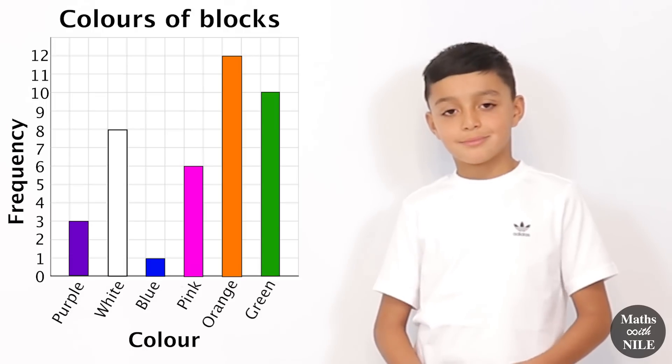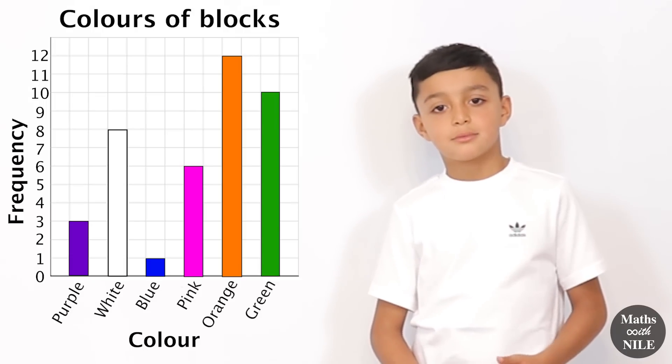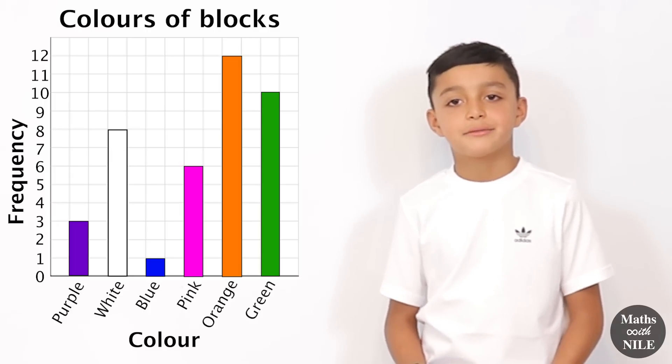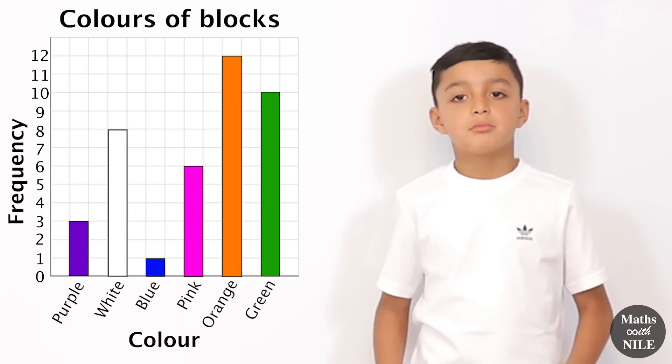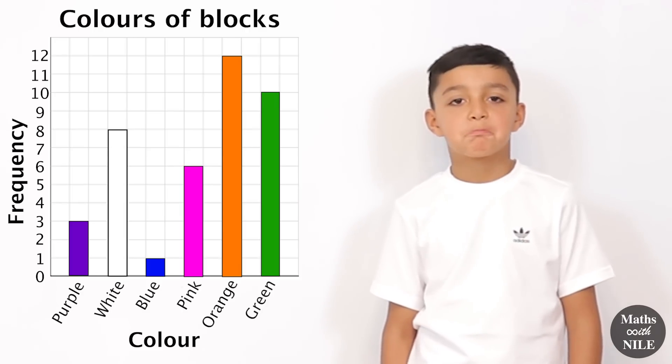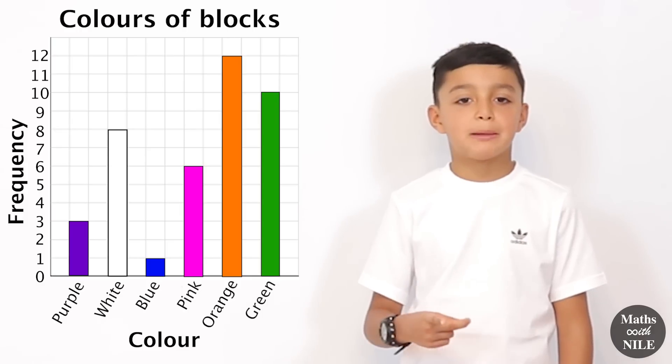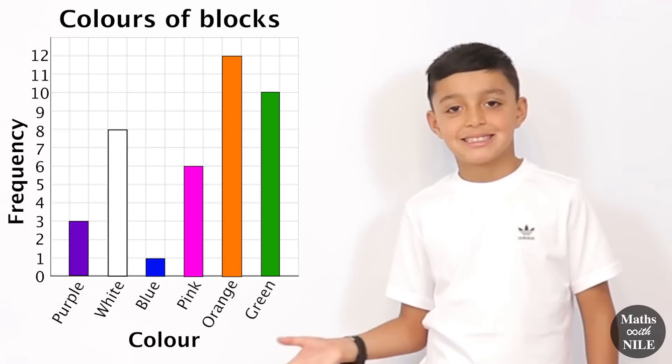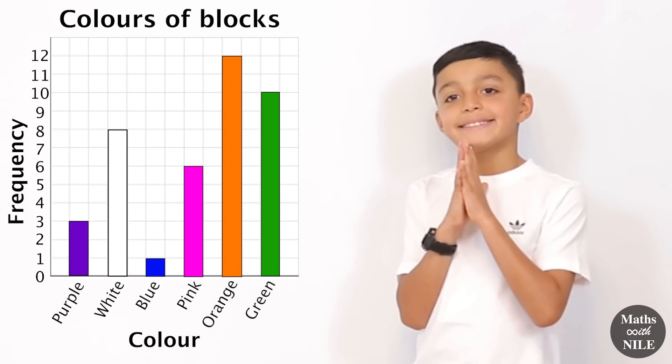So if I said to you straight away, what's the most popular colour? Orange. What's the least popular colour? Blue. If I said to you, how many does purple and white, how many blocks did you have purple and white in total, what would you quickly do? I would do 3 plus 8, which is 11. So it's very, very easy to read the information here.